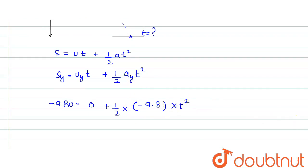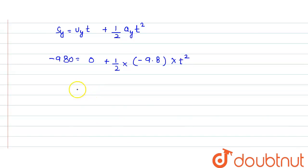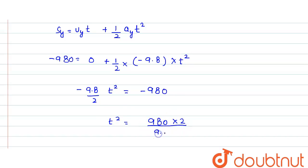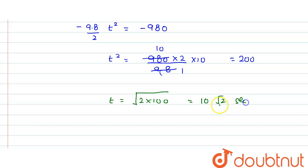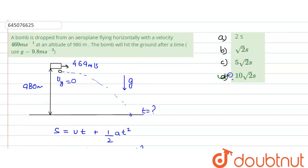Rewriting: −9.8/2 × t² = −980. So t² = 980 × 2 / 9.8. Removing the decimal by multiplying by 10, we get t² = 9800 × 2 / 98 = 200. Taking the square root: t = √200 = √(100 × 2) = 10√2 seconds. So the bomb hits the ground after 10√2 seconds, which means option D is the correct answer.